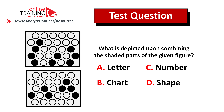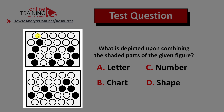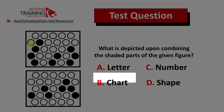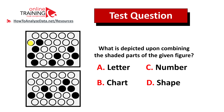Here's a tricky question from the real test: what is depicted upon combining the shaded parts of the given figure? You have two rectangles with circles inside — some white and some filled with black — and four possible choices: choice A letter, choice B chart, choice C number, and choice D shape. Give yourself 5 to 10 seconds to see if you can come up with the answer.